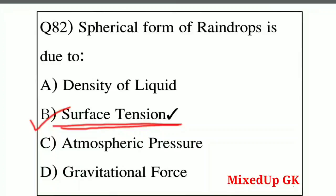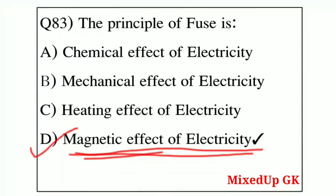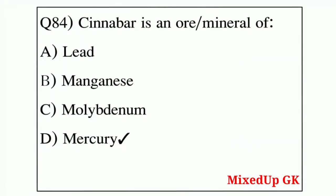These are physics questions important for exams. Question number 83: the principle of a fuse is based on — Option A: chemical effect of electricity, Option B: mechanical effect, Option C: heating effect of electricity, Option D: magnetic effect of electricity. The correct answer is the heating effect of electricity.